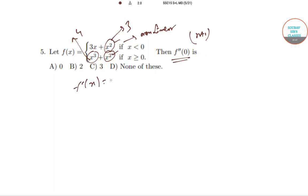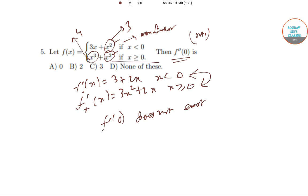So if I just do f dash x, this is 3 plus 2x for x negative, and f dash for x is 3x squared plus 2x for x greater than or equal to 0. So f dash 0 does not exist because these two values are not equal. Hence, we can say that none of the values of f double dash 0 here is applicable. So as f dash 0 does not exist, f double dash 0 also will be non-existential.